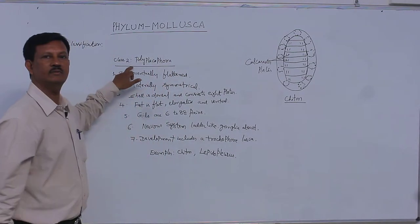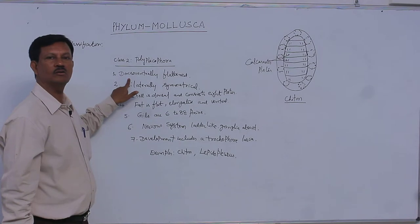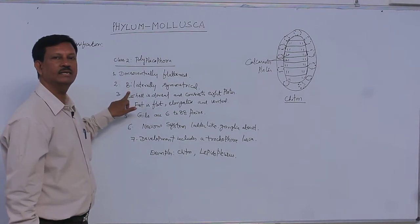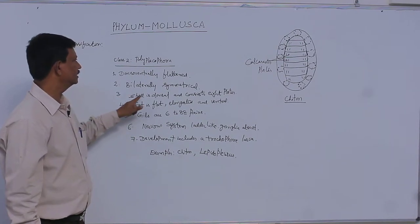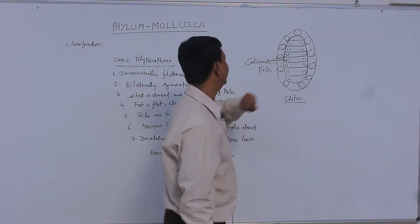Hence the class name is derived as Polyplacophora. Body is dorsoventrally flattened and bilaterally symmetrical. Body is divided into two equal parts. Shell is present on the dorsal side and consists of 8 plates.